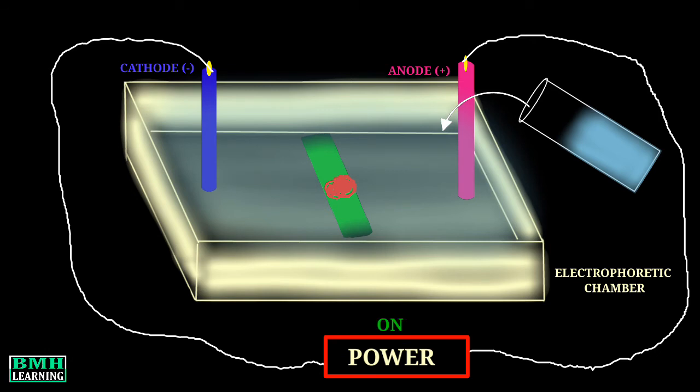A sample has both negative as well as positively charged particles, so the negatively charged particles would move towards positively charged electrode, which is anode. Similarly, the positively charged particles will migrate towards negatively charged electrode, which is cathode.